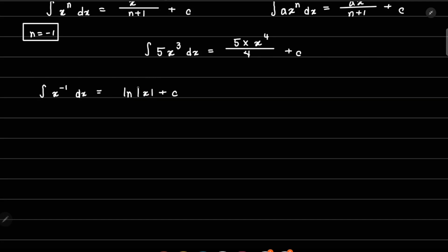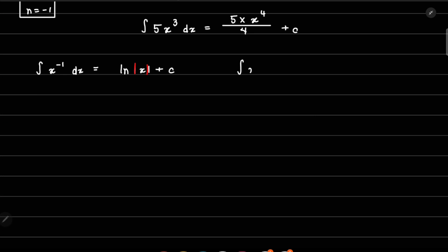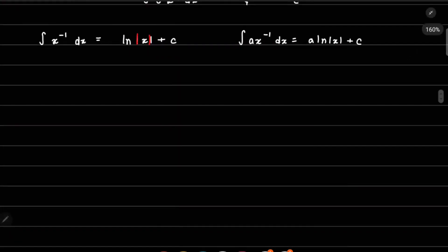We write ln|x| with a modulus sign — the two straight lines enclosing x — meaning we take the absolute value. Even if x is minus 3, we treat it as ln 3. We can also have a constant in front, so for a times x to the power minus 1 dx, the result is a times ln|x| plus C.